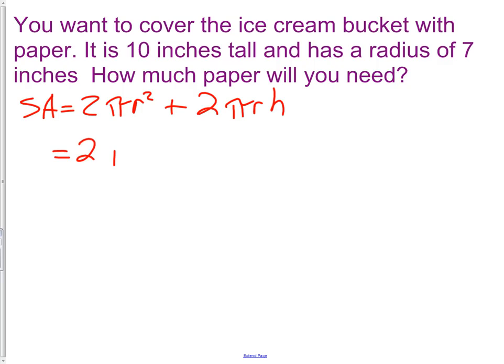Because now all I need to do is look up the formula. I have a 2, I have a π, the radius. I know the radius is 7, so I have 7² plus 2 times π times that same radius times the height, which is 10.